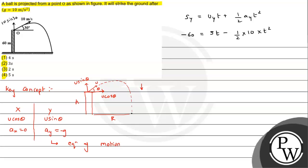On further simplification, we can write 5t² - 5t - 60 = 0. If we divide by 5, we get t² - t - 12 = 0.